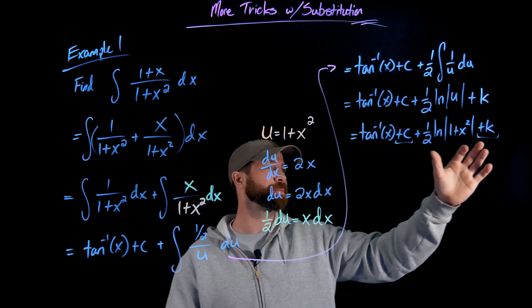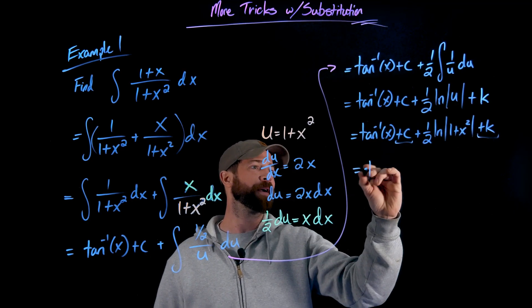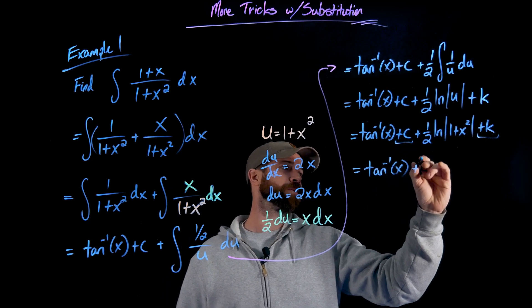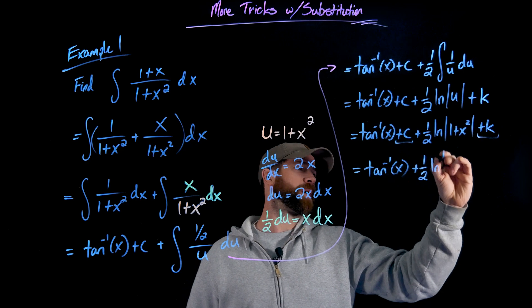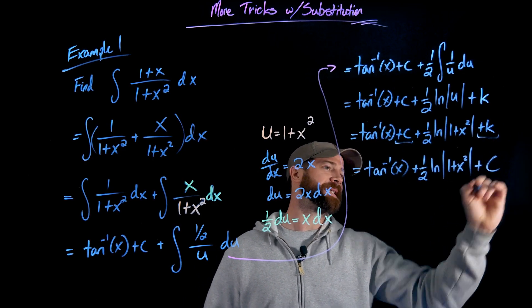So anytime you have multiple of these arbitrary constants, you just clean it up. And I'll use a third variable here. I'll just use a capital C. This will be the tan inverse of x plus 1/2 the natural log of 1 plus x squared, and I'll say plus big C.